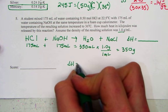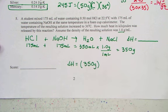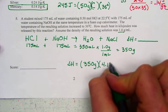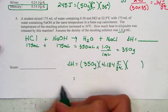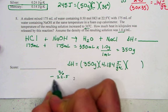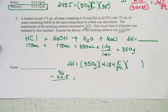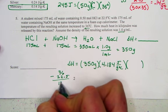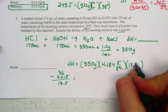Calculating the delta H, the enthalpy for this reaction, we would take 350 grams of our solution. Using the specific heat for water, 4.184 joules per gram degree Celsius, and the delta T comes from the final temperature, 36, from the initial temperature, 22.5, that gives us a temperature change of 13.5 degrees.